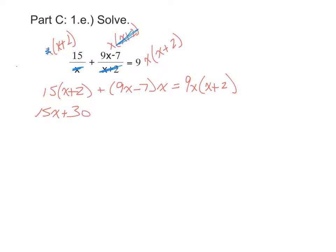In the next term, it's the x I'm going to distribute back in. So 9x times x is 9x squared, and minus 7 times x is minus 7x. On the right side, I'll distribute the 9x inside, and that'll give me 9x squared plus 18x.